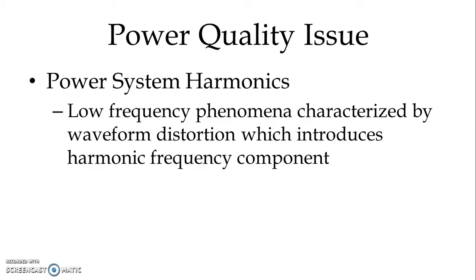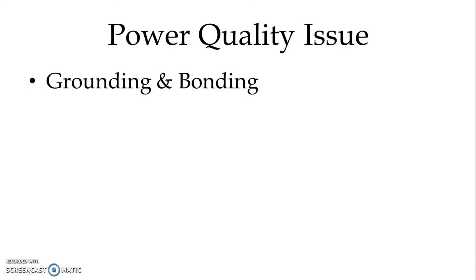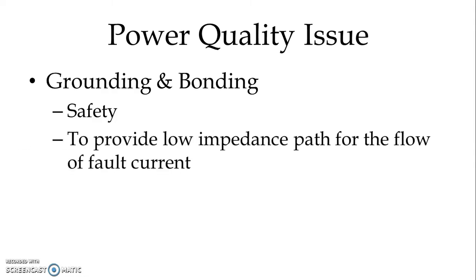Voltage and current harmonics have adverse effects on power system operation as well as power system components. Regarding grounding and bonding, the prime objective of grounding is safety.